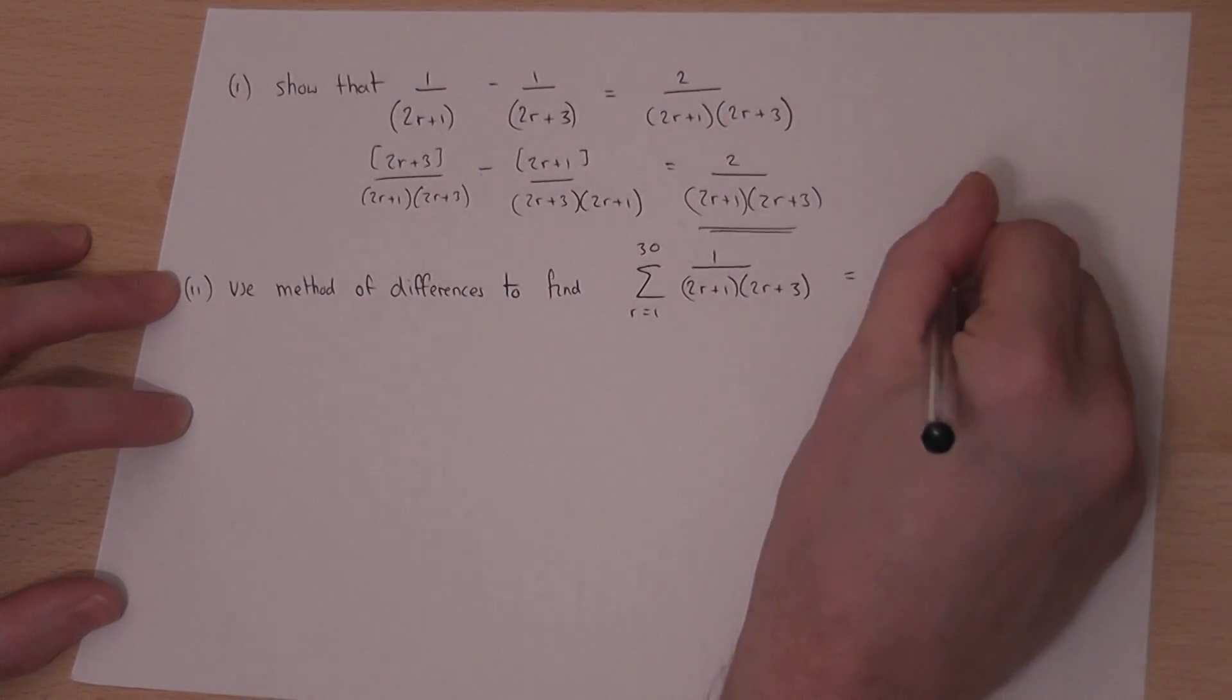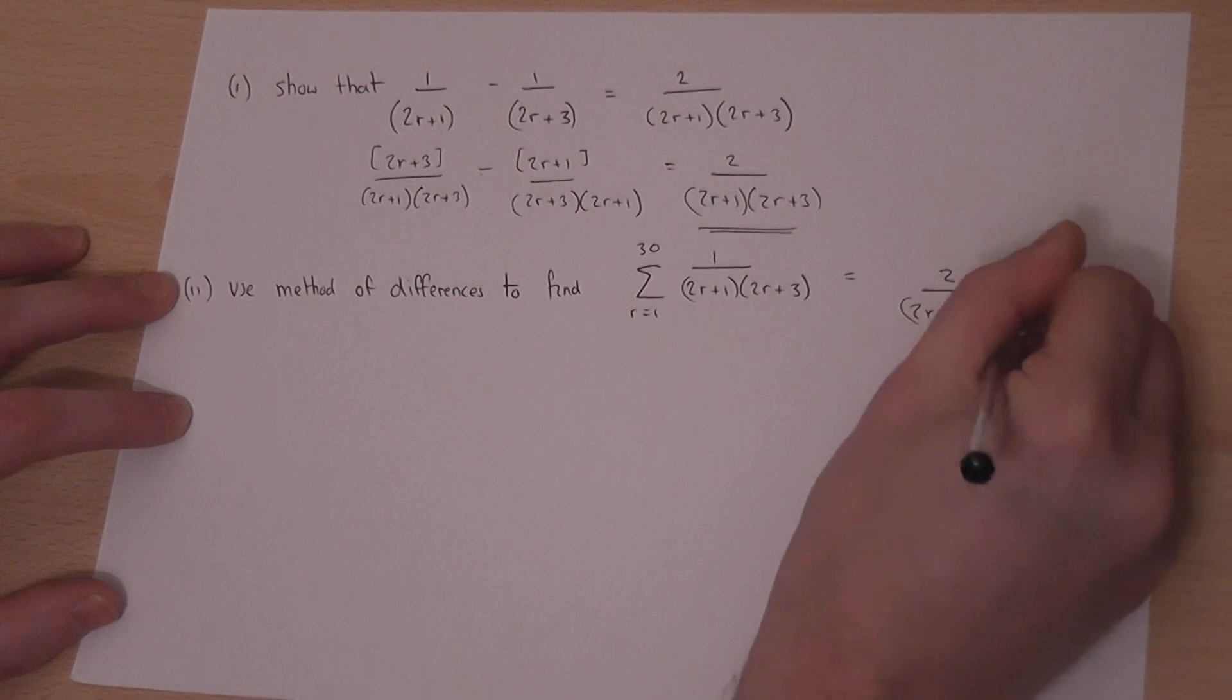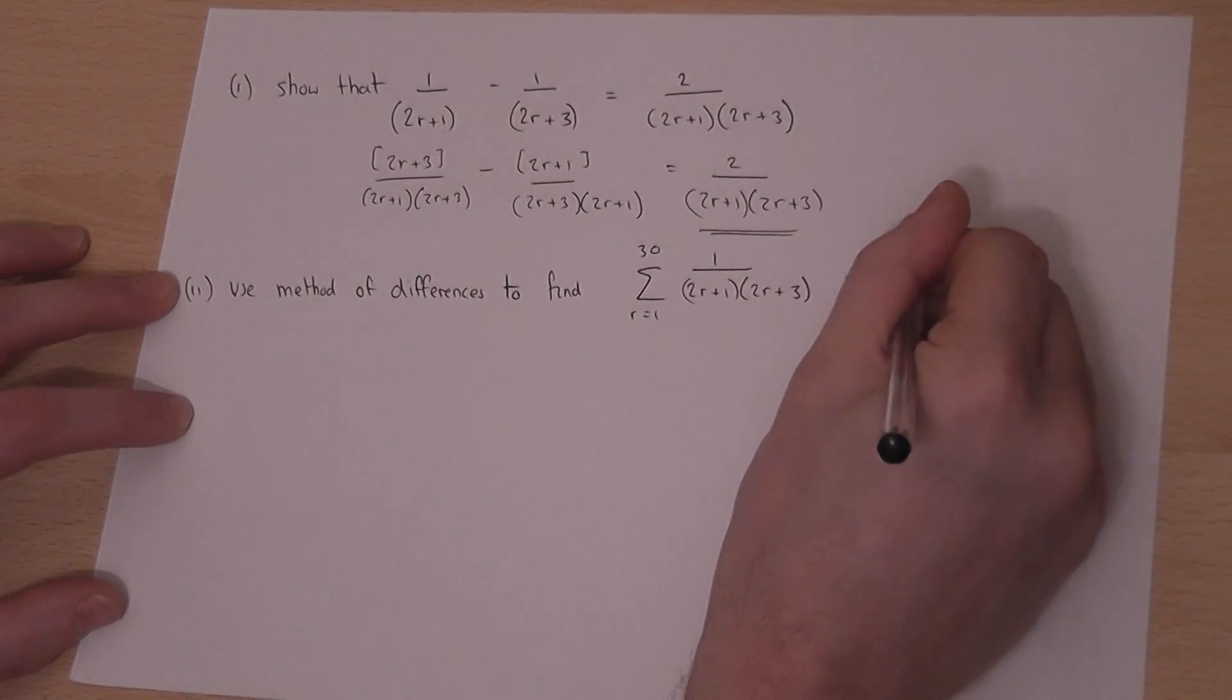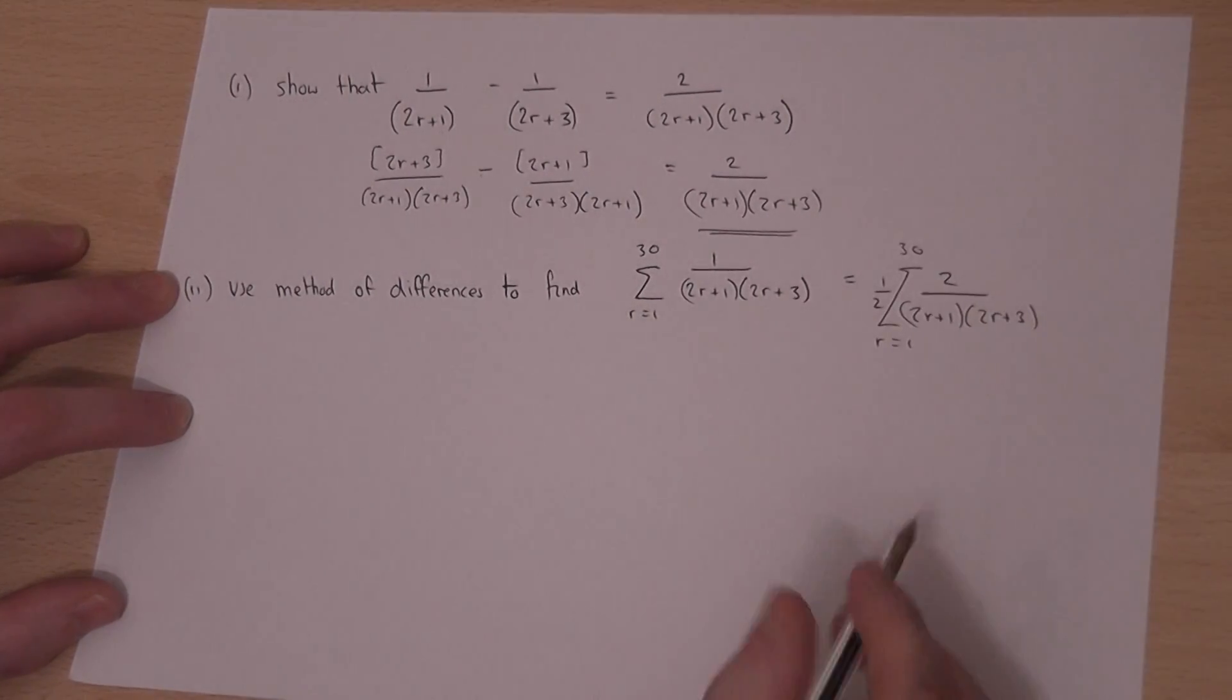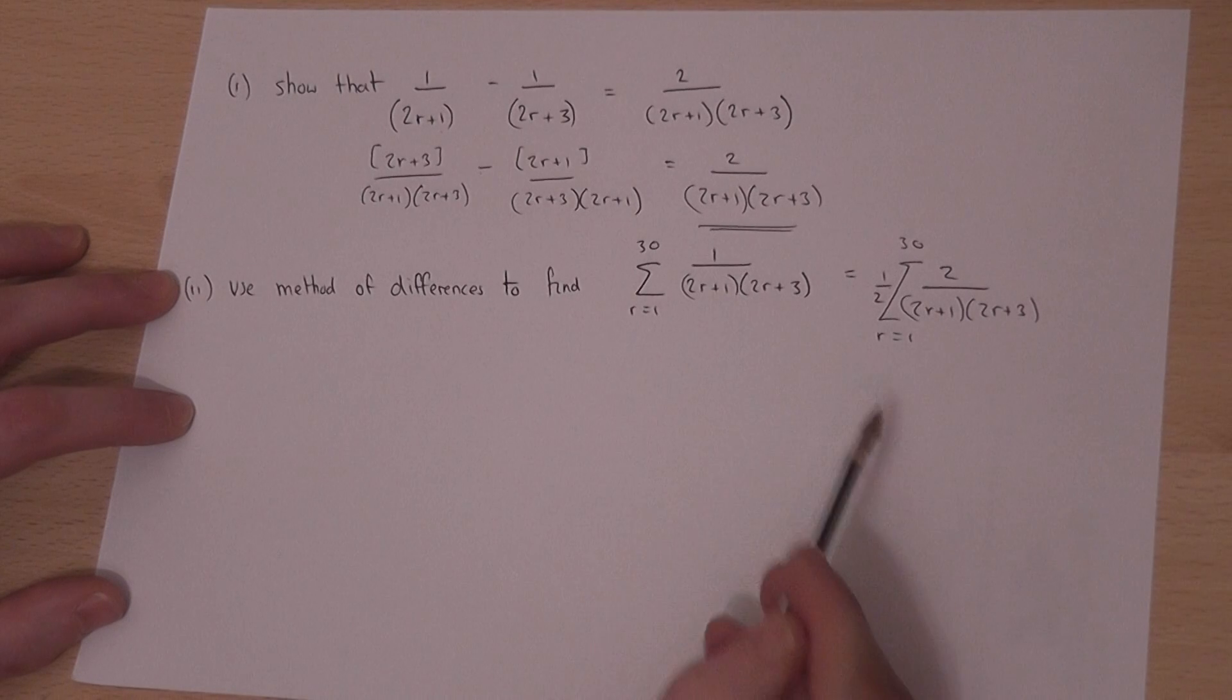So I could rewrite this as 2 over 2r plus 1, 2r plus 3 with the summation there as in the question, with a half outside. A half of 2 is just 1.